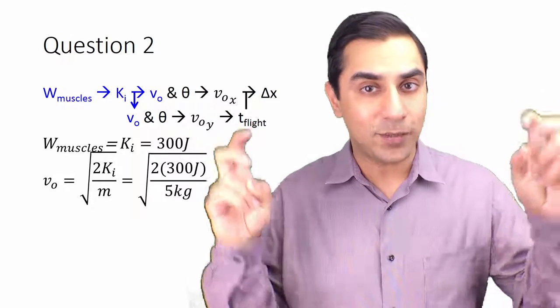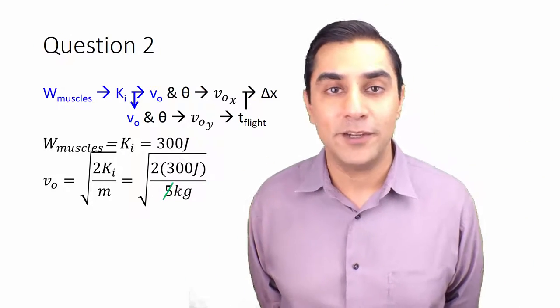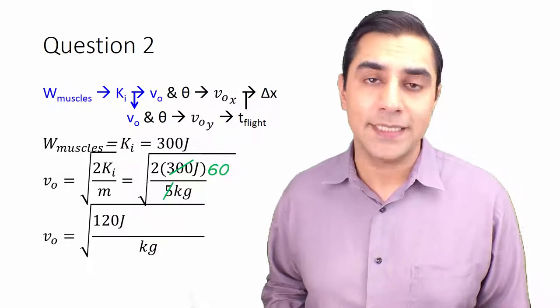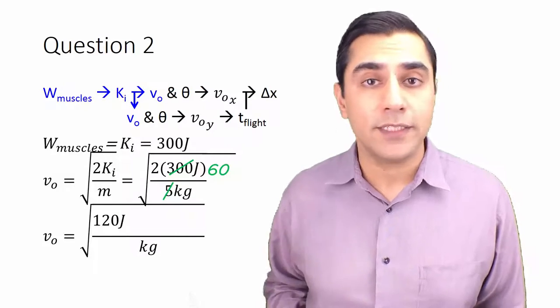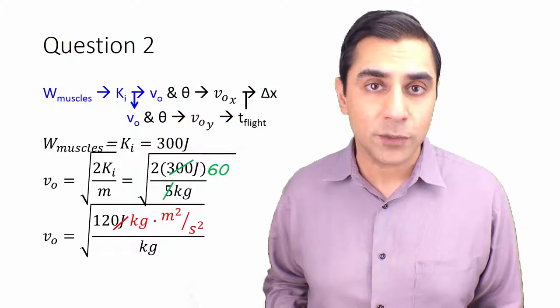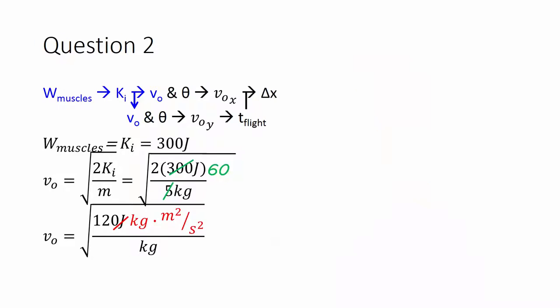Plugging into the formula we derived: we can cross out the denominator numerically — 5 divides into 300 sixty times, and 60 times 2 equals 120. We can also cross out the units: a joule is a kilogram times meters squared per second squared, so rewriting joules as component units allows us to cancel out kilograms. What we have left is a square unit under a radical. The number under the radical, 120, is close to 121, which is a perfect square. So we estimate: √121 m²/s² = 11 m/s as our estimate for the initial speed.